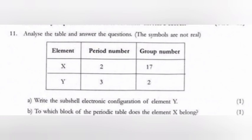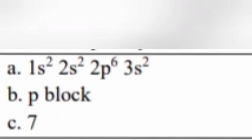Question 11: Analyze the table and answer the questions. 11a: Write the subshell electronic configuration of element Y. 11b: To which block of the periodic table does the element X belong? 11c: How many electrons are present in the outermost shell of element X? Answer 11a: 1s2, 2s2, 2p6, 3s2. Answer 11b: P block.